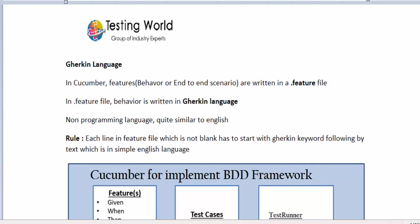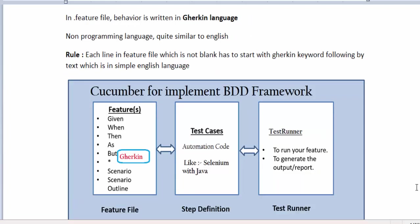To implement the BDD framework, we are going to create a feature file, and in this feature file we are going to write our end-to-end scenarios in a language called Gherkin. Then we are going to write actual automation test cases in another file called step definition. Whenever we go for automation, first we have to define the behavior of the application — the end-to-end scenarios — in a feature file.